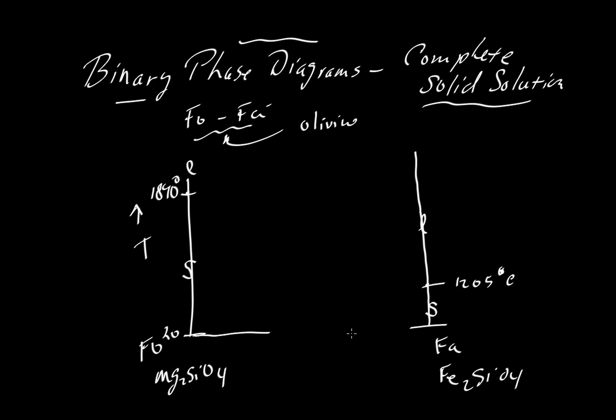Now we can draw a horizontal axis that connects these two, and this will be a composition axis. We can let it represent the fraction of fayalite as we go from 0% fayalite—that would be pure forsterite or pure magnesium in composition—to something that is 100% fayalite. We'll just use fractions and call it 1, completely iron in composition with no forsterite or magnesium components in it.